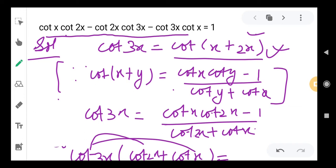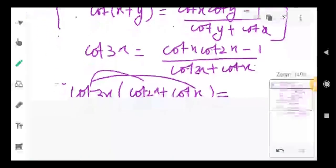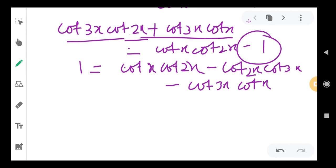And so this is the only step. First of all, we write cot 3x as cot(x + 2x), then use the formula for cot(A + B). We use this formula, do cross multiplication, expand, and try to make what we need to prove. And this is it.